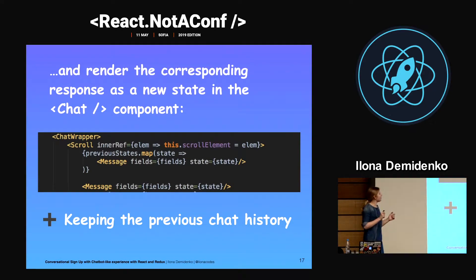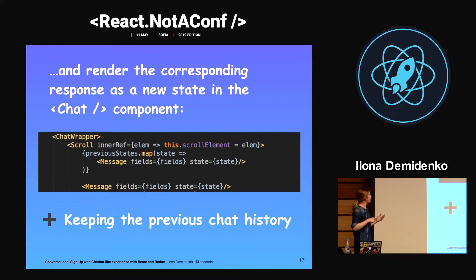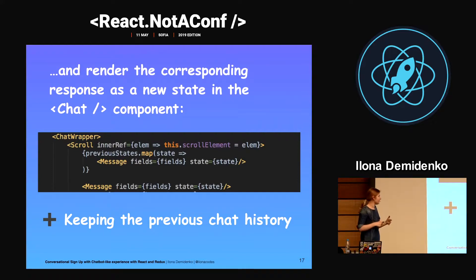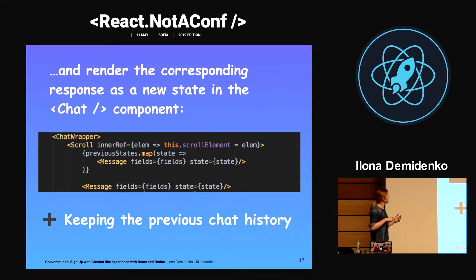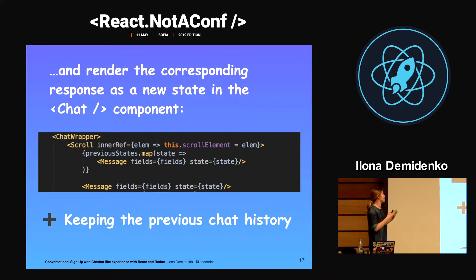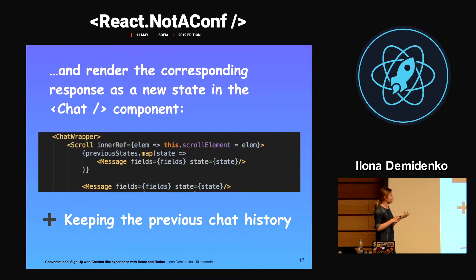In the next step, I want to show how we render all the messages. We have a message component that renders the current message with the user responses. The previous state — which consists of the previous messages in the chatbot — is also rendered through the message component.